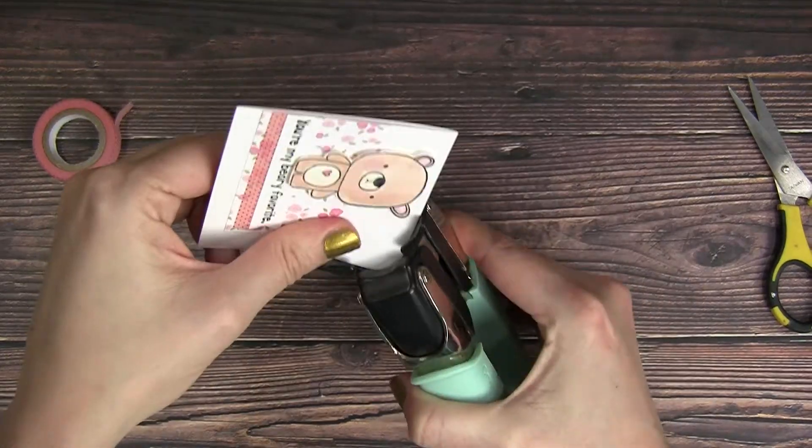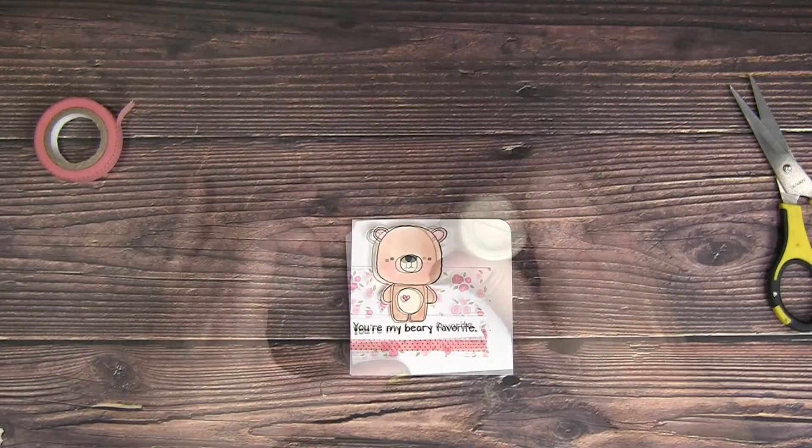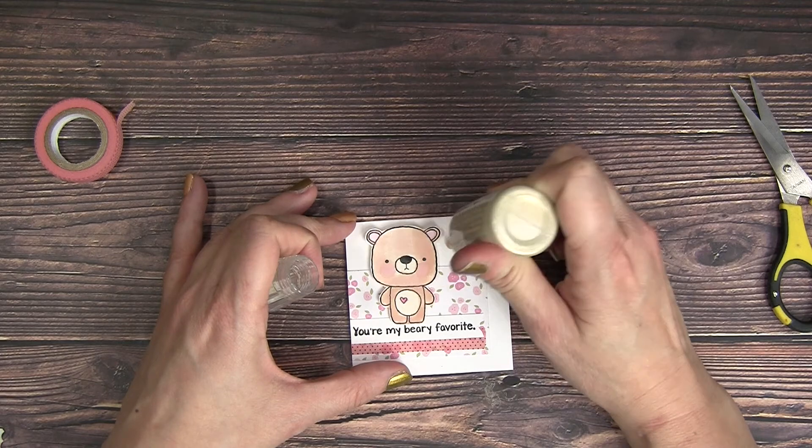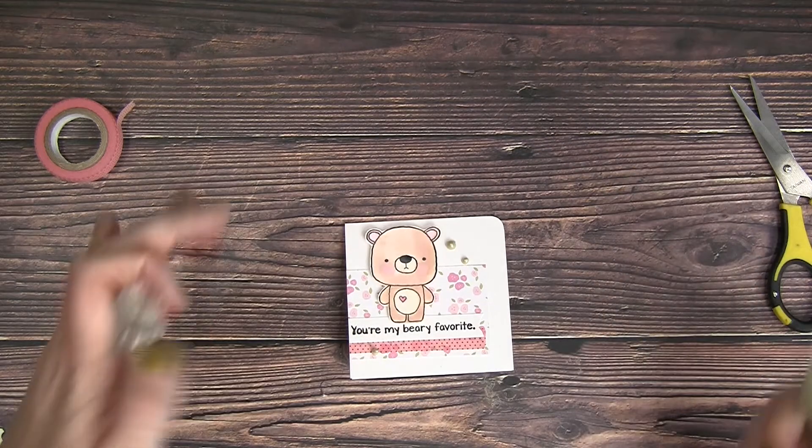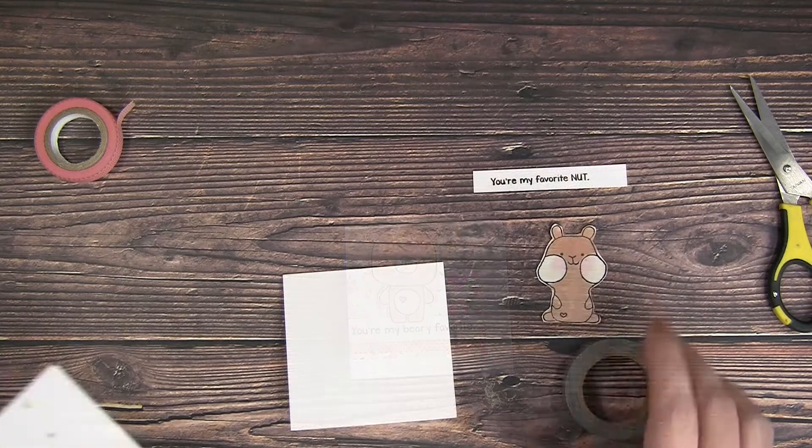I'm going to grab my corner rounder again, just kind of round off that edge for a little bit more interest, and again add the nouveau drop in pale gold just for a little bit of something something.